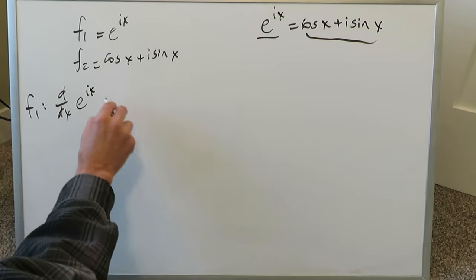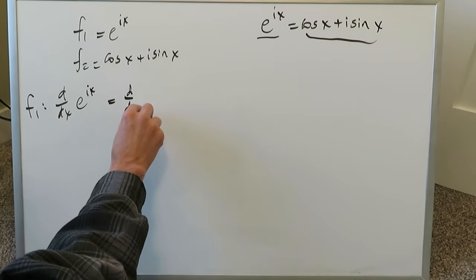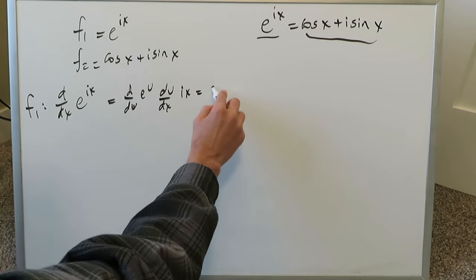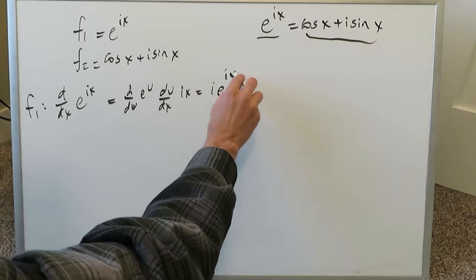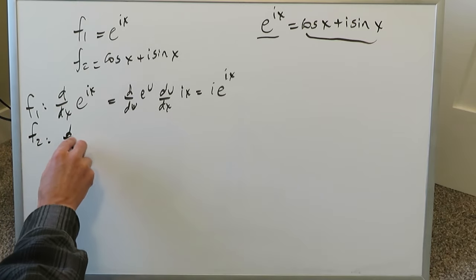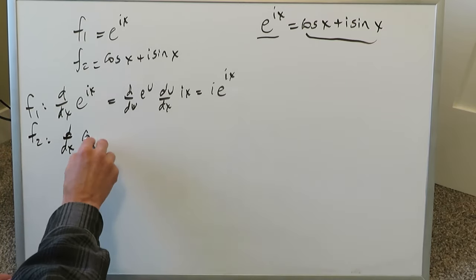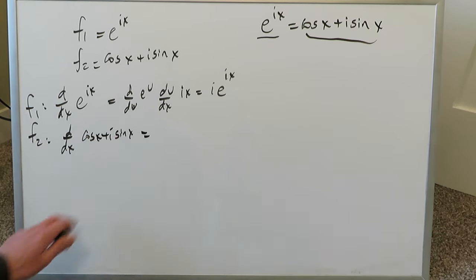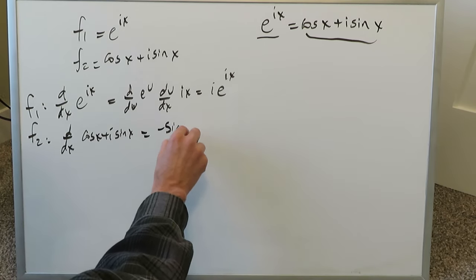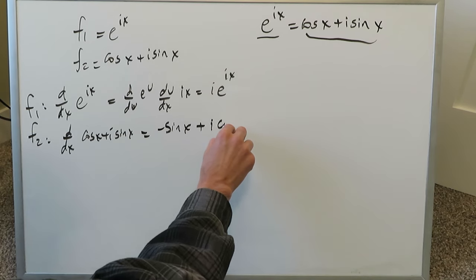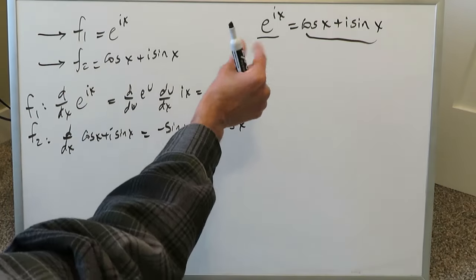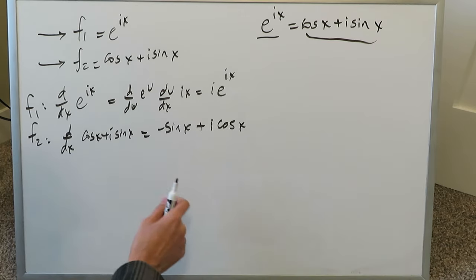Some form of commonality will appear and that's the route we want to take. If you take the derivative of f1 — which is e to the ix — using the chain rule, you get d/du of e^u times du/dx of ix. The x goes away, i is retained, giving i times e to the ix — that's the derivative of f1. The derivative of f2 — which is cosine x plus i sine x — treats it like a polynomial in trigonometric form, giving −sin x plus i cos x. That is the derivative of the f2 function.